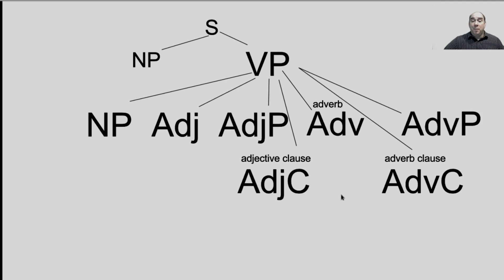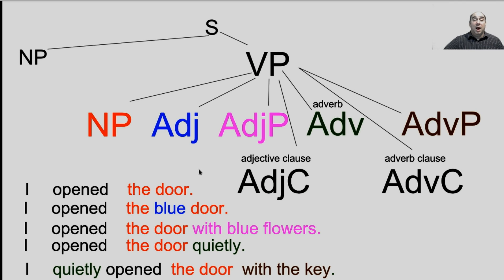A verb phrase can also carry a whole bunch of different things. For example, you can have a noun phrase, an adjective, an adjective phrase, an adverb, an adverb phrase, an adjective clause, and an adverb clause — all in addition to a verb. Here are some examples: "I opened the door" — "the door" is a noun phrase inside the verb phrase. "The blue door" — "blue" is an adjective sitting inside the noun phrase. "With blue flowers" — that's an adjective phrase describing the door. "I opened the door quietly" — "quietly" is an adverb phrase. "I quietly opened the door with the key" — this tells me how I opened the door, so it's an adverb phrase.